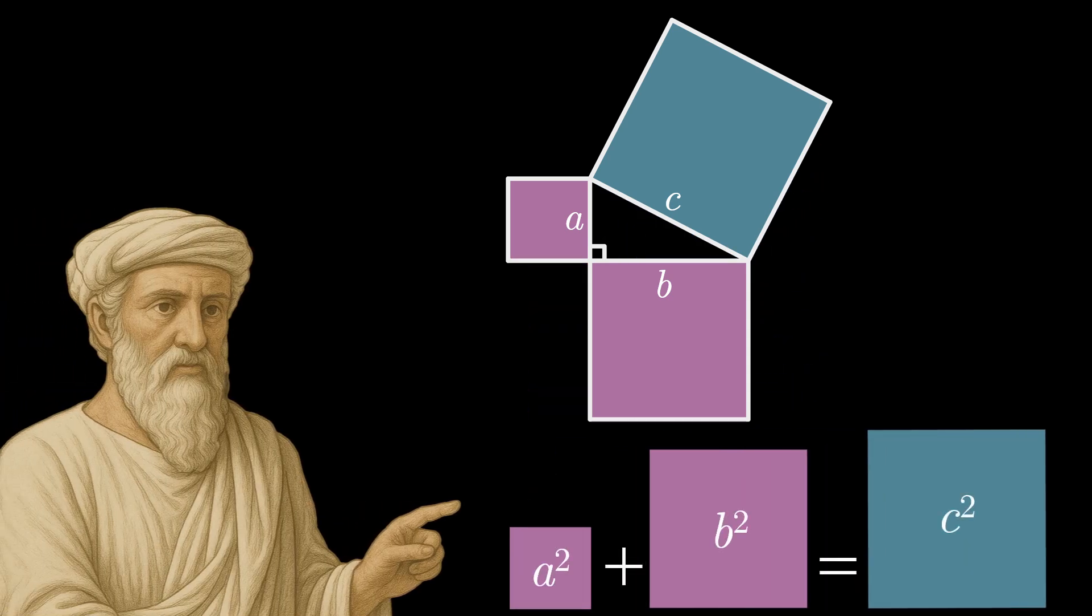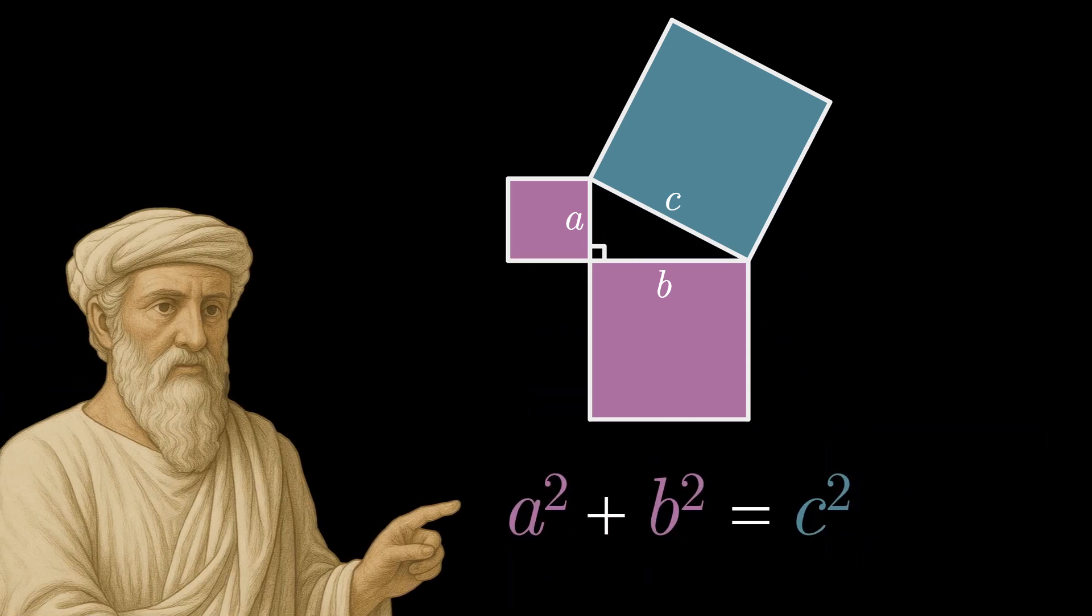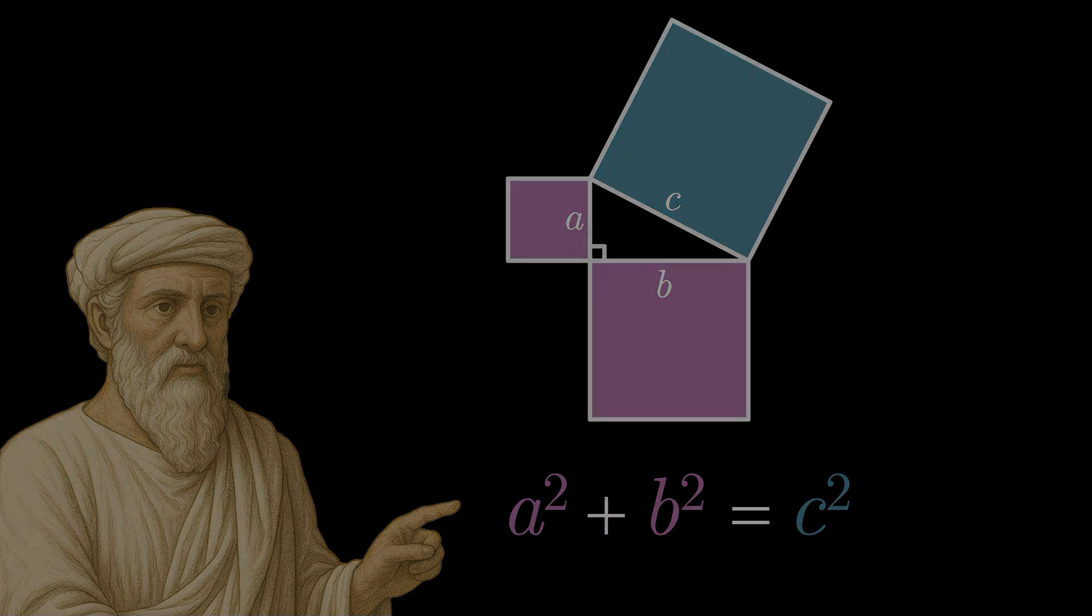The Pythagorean Theorem. There are literally hundreds of different proofs of this famous property of right triangles, but the following is definitely one of the slickest.